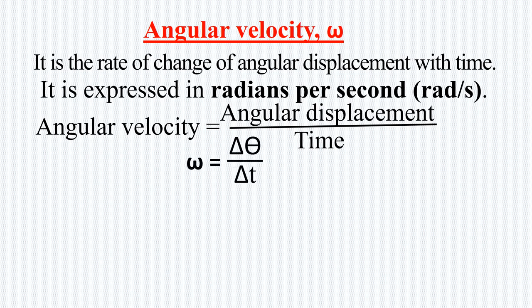The symbols are omega equals delta theta over delta t, meaning that angular velocity equals angular displacement divided by the time, or the change in angular displacement over change in time. Since we know that the change in angular displacement equals s over r, we can write omega as s over rt.